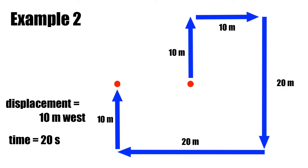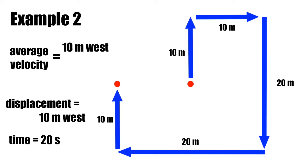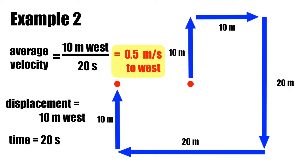The displacement in this example was 10 meters west. To calculate the velocity, we take the displacement and divide it by the time it took for that motion — in this case, 20 seconds. That gives us a velocity of 0.5 meters per second west. Again, this highlights the difference between distance and displacement, and between speed and velocity.